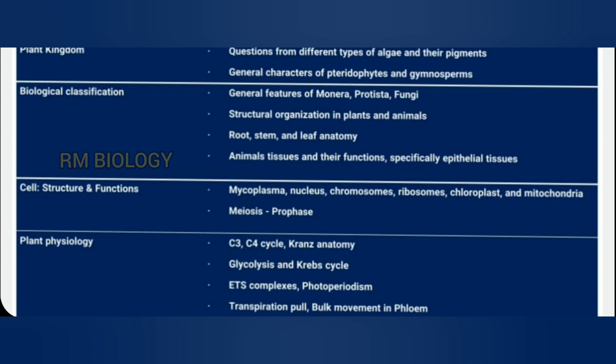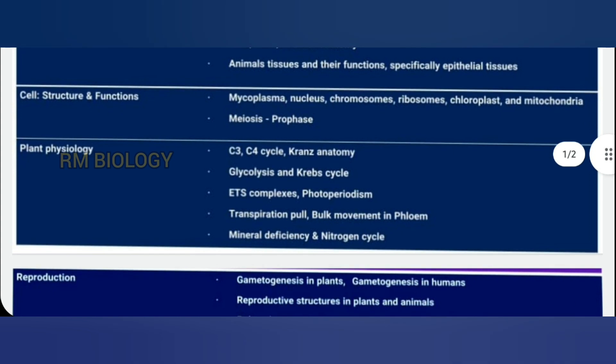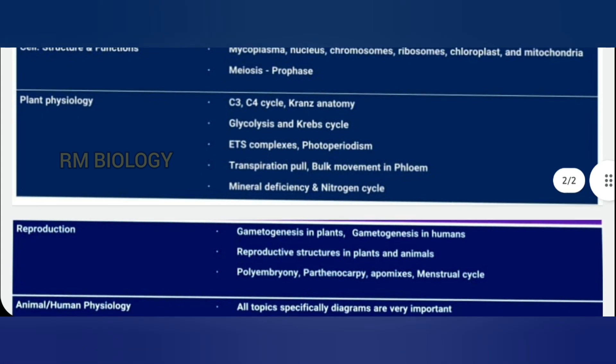Animal tissues and their functions — specifically epithelial tissue is important for NEET 2021. Then the chapter cell structure and function: mycoplasma, nucleus, chromosome, ribosome, chloroplast, mitochondria, cell division, and meiosis — prophase in particular is important.